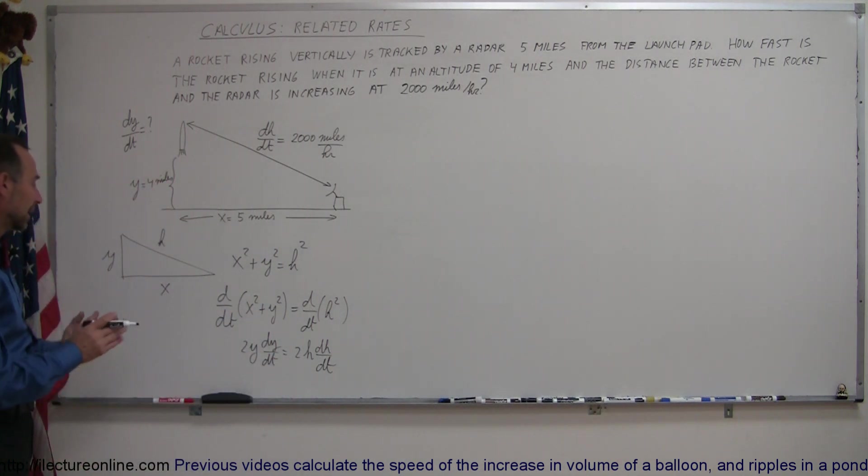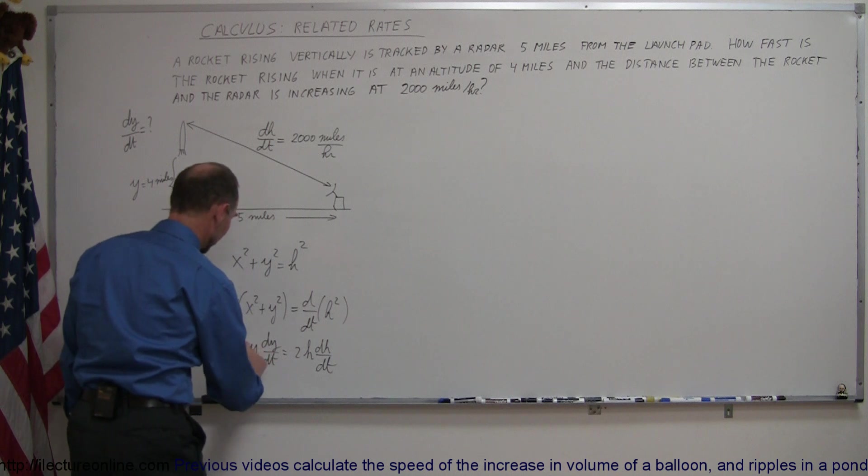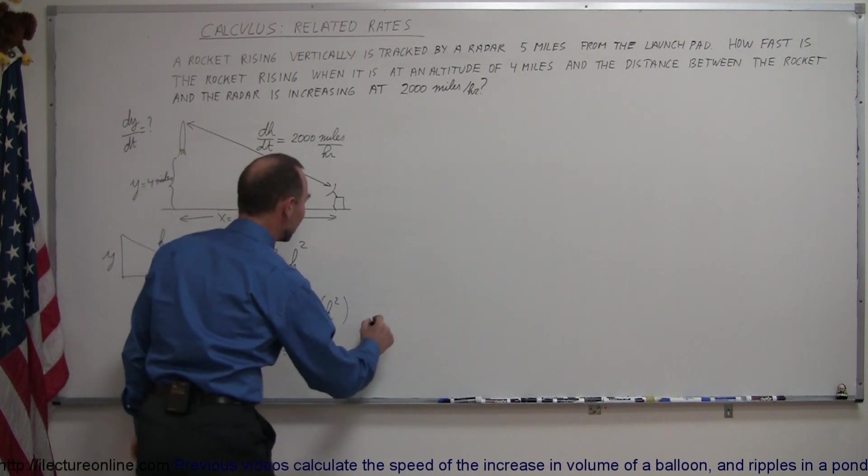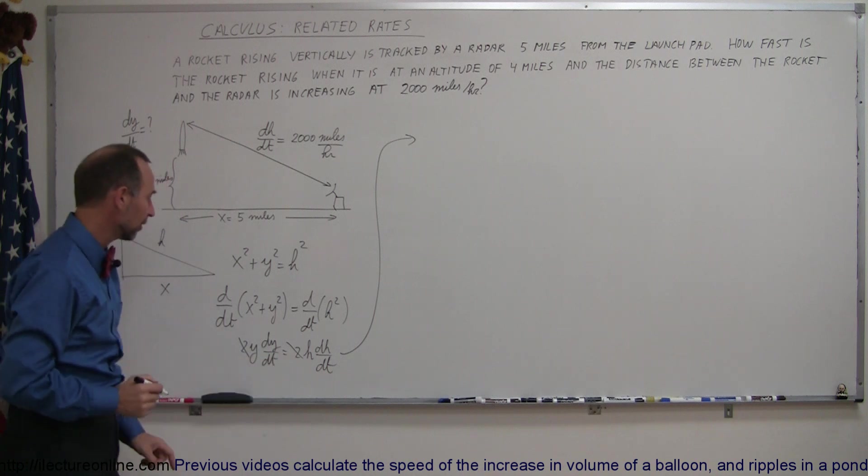All right. Now, since we're looking for dy dt, we're going to solve that for dy dt. And we can already see that the twos cancel on both sides, which means if I then simplify my equation and take the y, bring it to the other side,